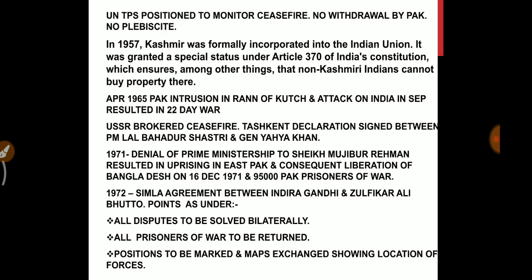In 1957, Kashmir was formally incorporated into the Indian Union. It was granted a special status under Article 370 of India's constitution, which ensures, among other things, that non-Kashmiri Indians cannot buy property there.